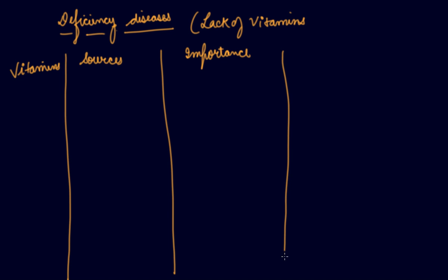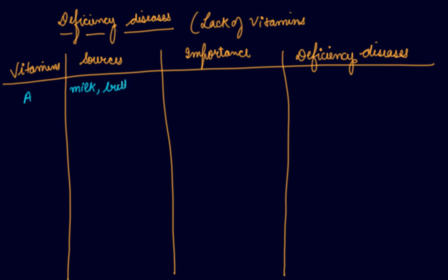Vitamin A sources are milk, butter, eggs, carrots, cod liver oil, and tomatoes.